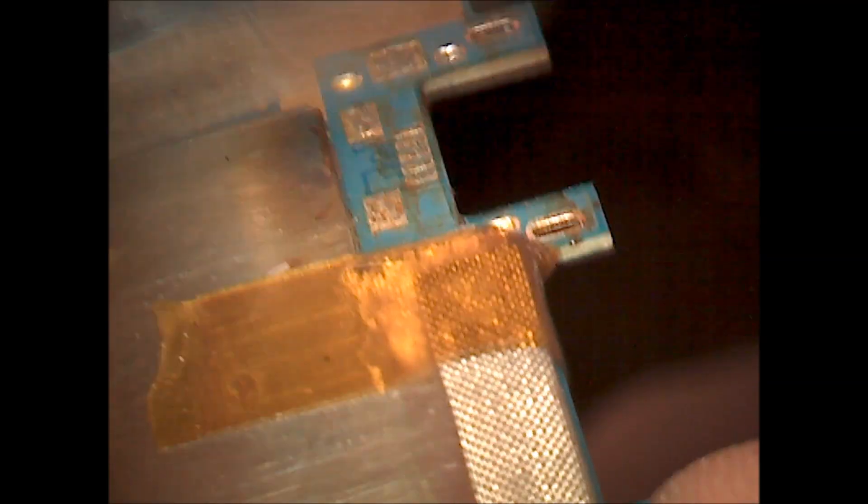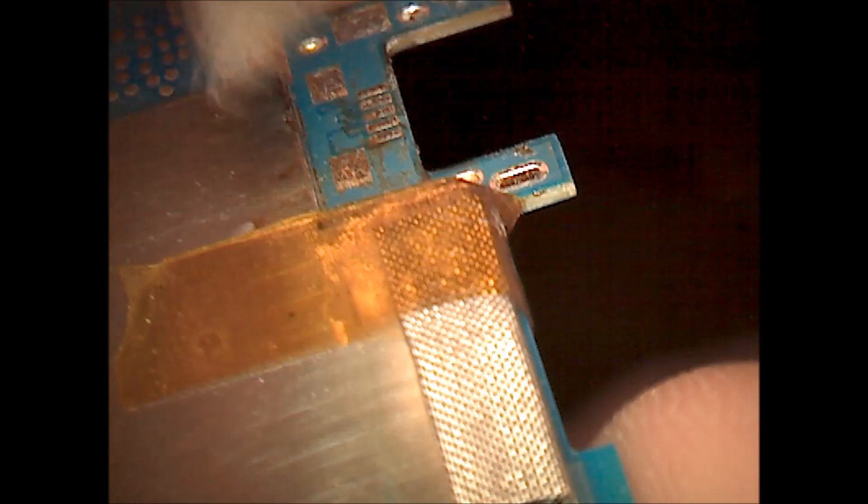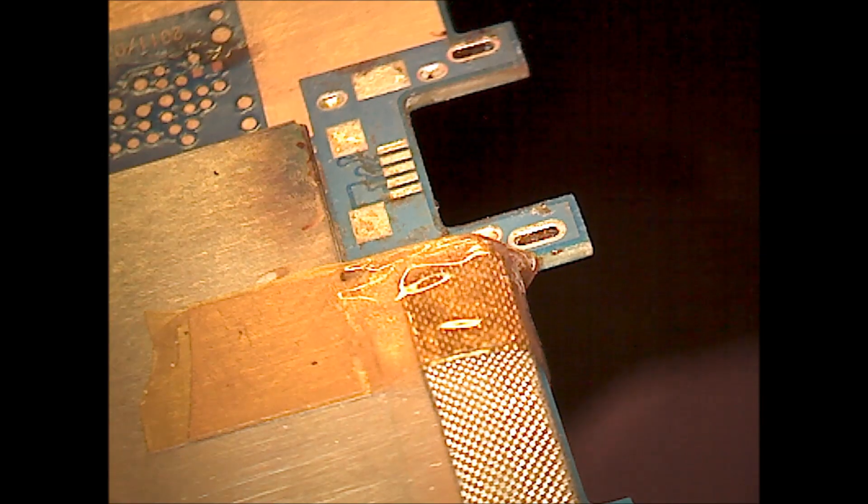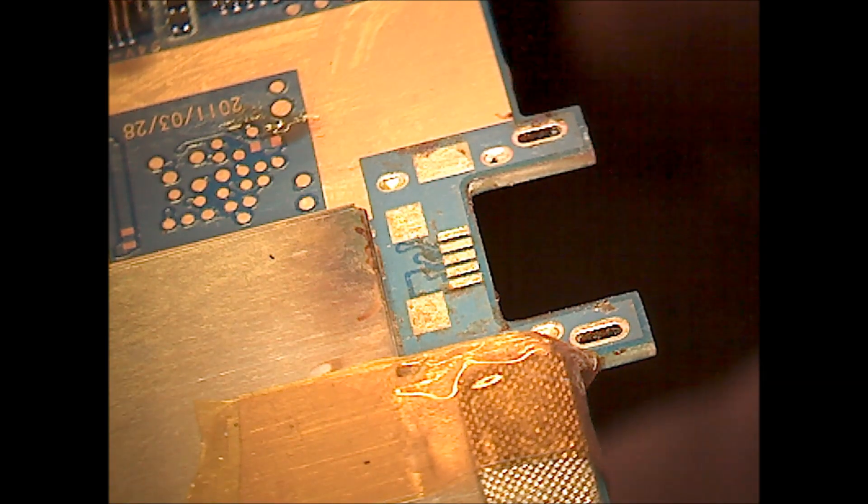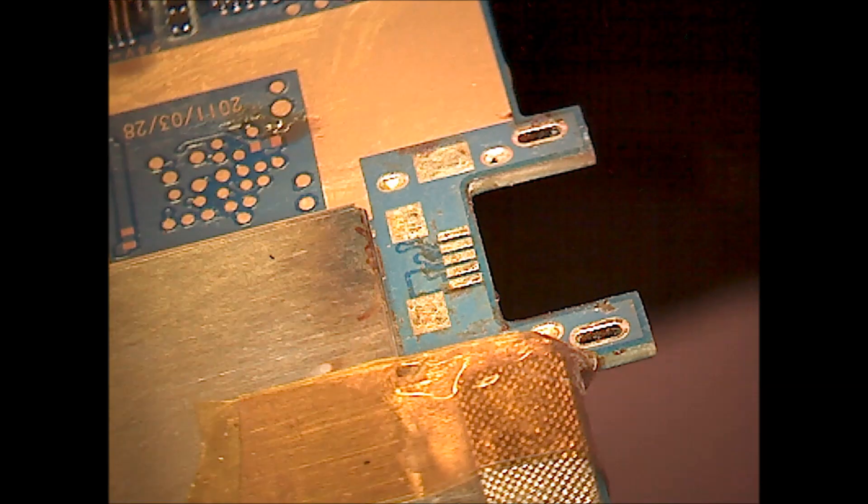As you can see on here, right now we're cleaning because the flux does have some corrosive properties to it and it will kind of get stuck on the board and get kind of nasty. So we just took some denatured alcohol with a brush and right now we're just cleaning it off to get it nice and neat. And it's a good practice to do this at the end of the repair as well. That way you can make sure that there's no flux that will stay on there and possibly corrode those components over time.